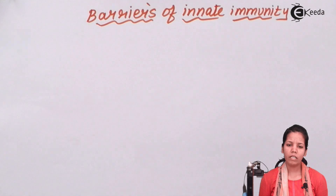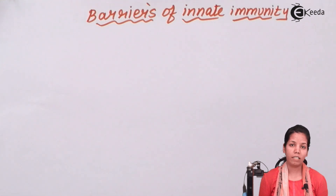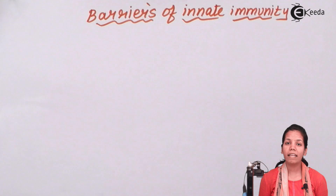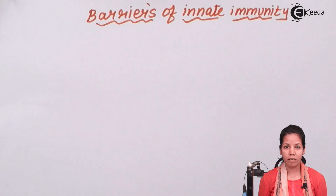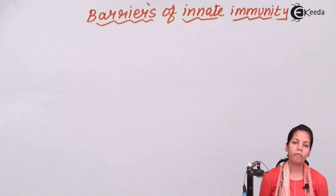Innate immunity relies on certain barriers. These barriers could be phagocytic barriers, inflammatory barriers, anatomical barriers, or physiological barriers.